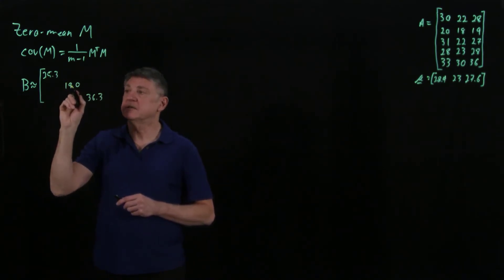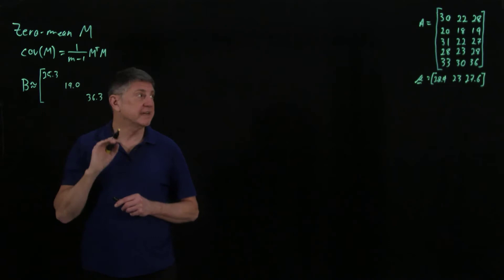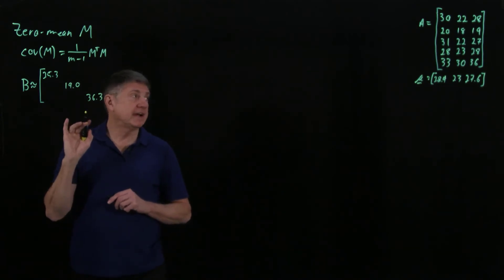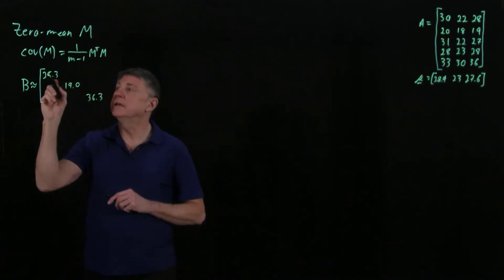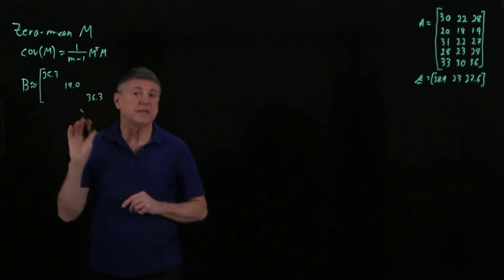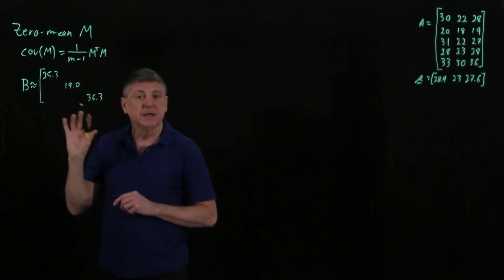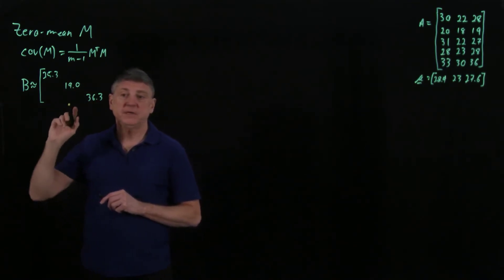What that says is test two doesn't vary very much, so it tended to have more consistent scores. Tests one and three had higher variance, meaning greater spread from the mean on those tests.